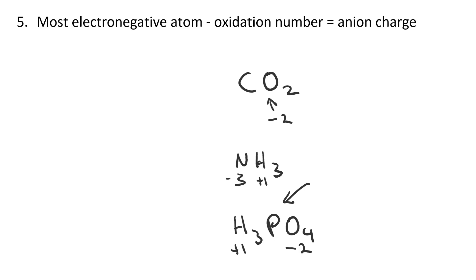I should also point out that sometimes oxygens are not minus two. Consider hydrogen peroxide, H₂O₂. Deal with the hydrogen first — it's plus one. In this case, the oxygen is minus one. We'll see why in a moment.